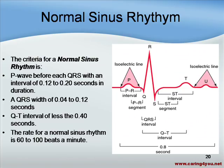Let's talk about normal sinus rhythm. The criteria for a normal sinus rhythm is a P-wave before each QRS with a PR interval of 0.12 to 0.20 seconds in duration. In other words, the P-wave should be only three small blocks to one large block in duration. The QRS width should be 0.04 to 0.12 seconds, meaning the width should be only one small block to three small blocks.